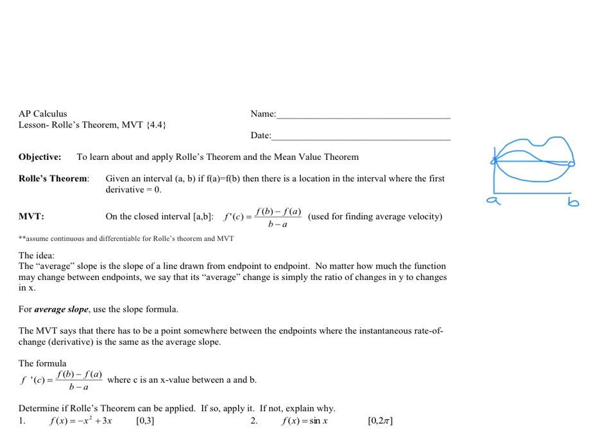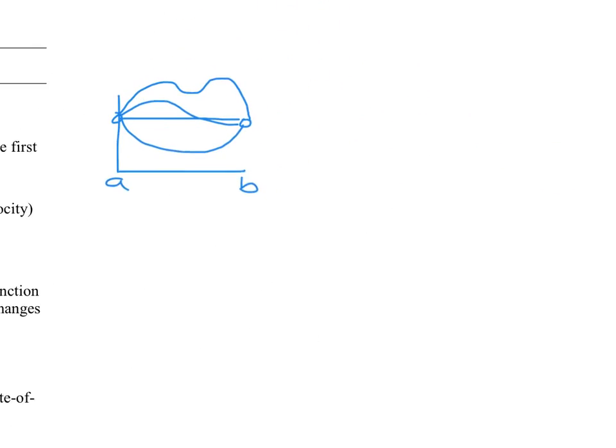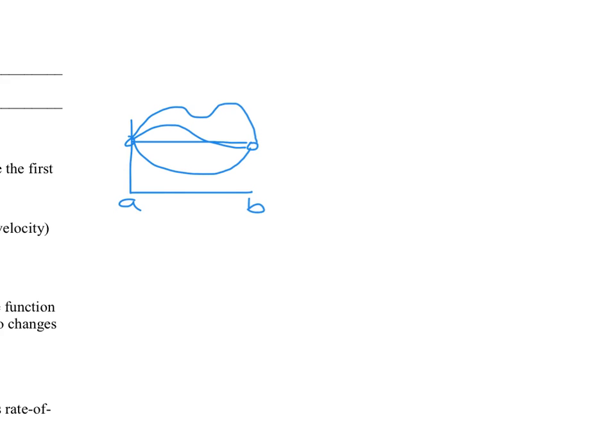Mean Value Theorem: on the closed interval a to b, you have the instantaneous rate of change being equal to the average rate of change. We've actually worked with this already a long time ago and repeatedly since then. The idea is that at some point the average and instantaneous rate of change would have to be the same. My real-life analogy would be you're driving in a car, commuting to work or school. You do simple speed, distance over time, and come up with 60 miles an hour.